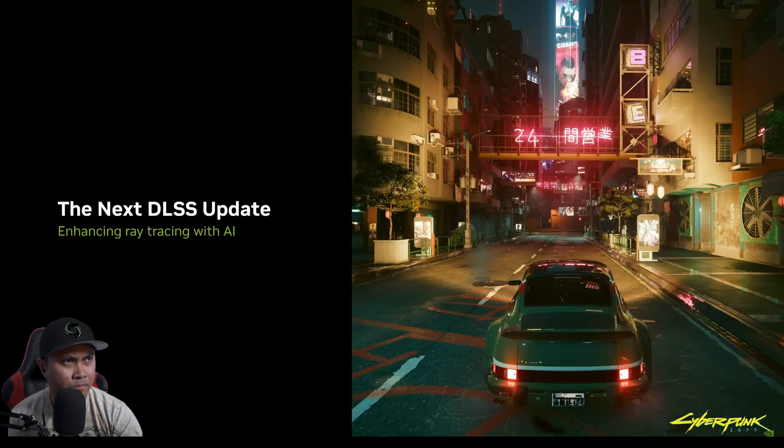Today, neural rendering takes the next big step forward with DLSS 3.5. DLSS 3.5 improves ray tracing with a new AI model that is more accurate and more beautiful than traditional rendering methods. Let me show you how.